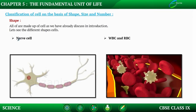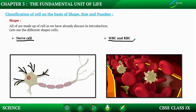Nerve cells or neurons have many branches, which help in the transfer of messages throughout the body, aiding in control of the entire body. White blood cells (WBC) and red blood cells (RBC) also differ in shape. Red blood cells are round, spherical, disc-like structures, while white blood cells are the only cells in the human body that can change their shape. This completes the classification of cells on the basis of shape.